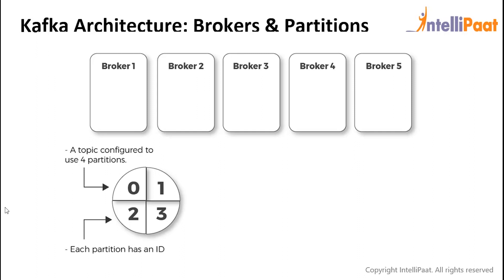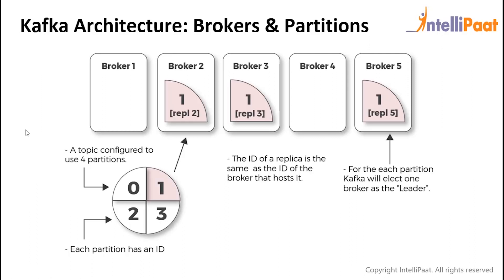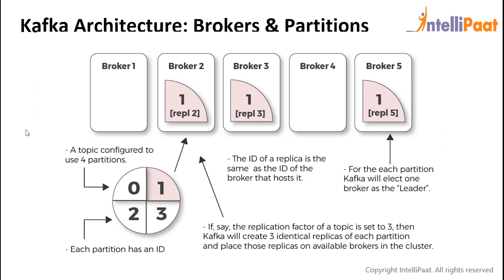With multiple brokers and a topic that has four partitions, each partition has its own ID. The ID of a replica is the same as the ID of the broker that hosts it, and for each partition Kafka will elect one broker as the leader. Supposing the replication factor of a topic is set to three, then Kafka will create three identical replicas of each partition and place those replicas on available brokers in the cluster.